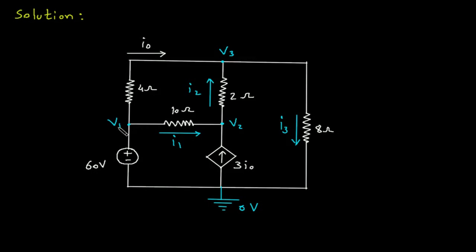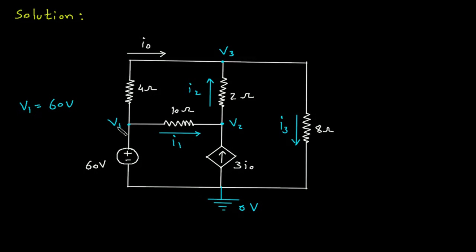As we can see, V1 is equal to 60V, because this 60V source is directly connected to ground, so this voltage is equal to 60V.